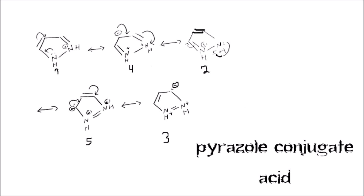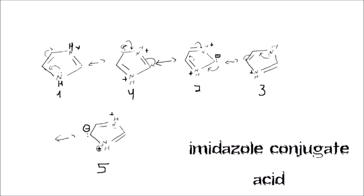Now let's look at the imidazole conjugate acid resonance structures — here are the five. As you can see, the positive charges are not next to each other; they are further apart. That's still not ideal, but it's much better than having two positive charges adjacent to each other. That's why imidazole is more basic: the imidazole conjugate acid resonance structures are more stable because the charges are further away from each other.